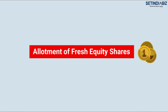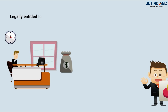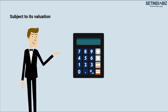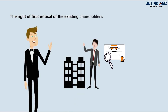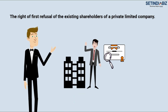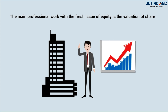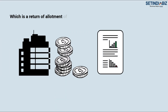Allotment of Fresh Equity Shares. The Board of Directors are legally entitled to issue fresh equity shares of the company. However, subject to its valuation and the right of first refusal of the existing shareholders of a private limited company, the main professional work with the fresh issue of equity is the valuation of shares and filing the PAS-3 to ROC, which is a return of allotment of shares of the company.